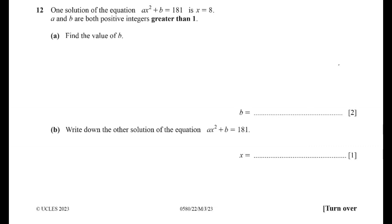Question 12: One solution of the equation ax² + b = 181 is x = 8. So we can replace x by 8: a times 8² plus b equals 181. It means 64a plus b equals 181.